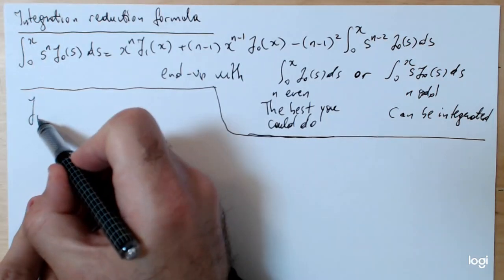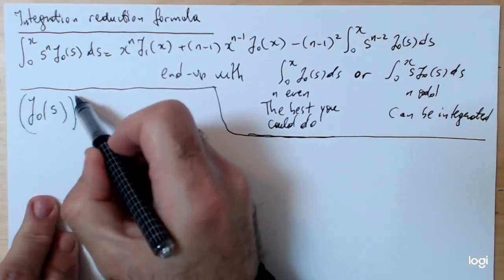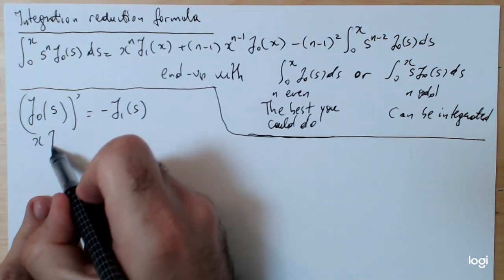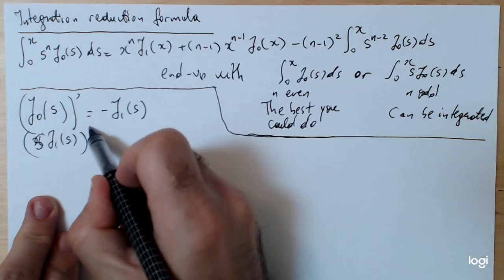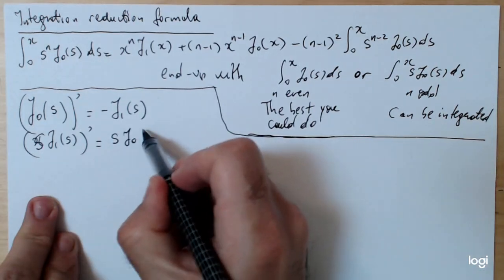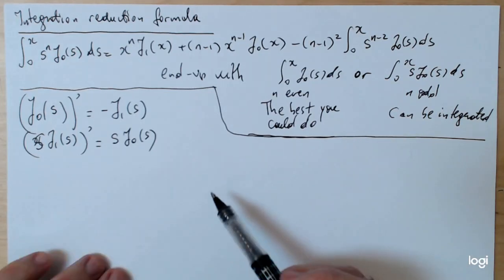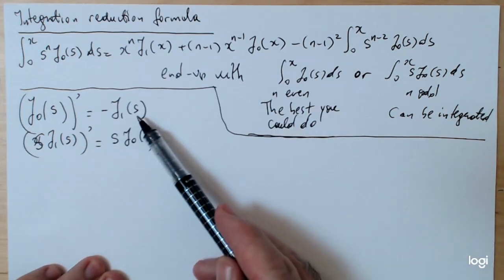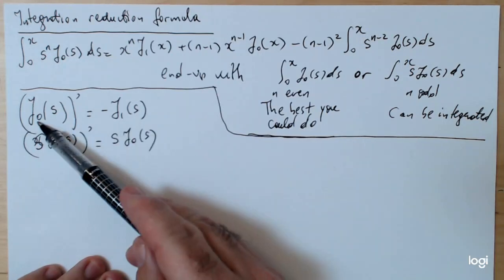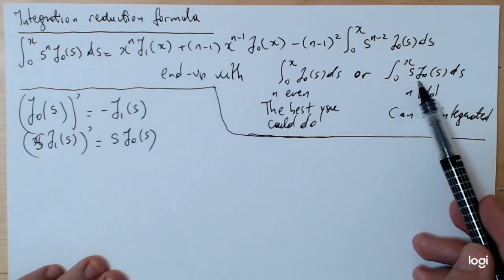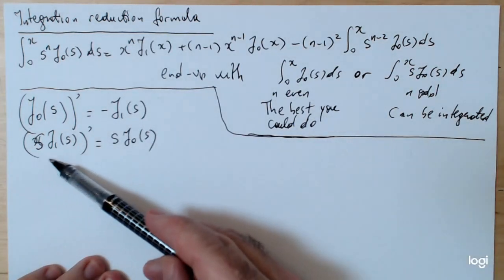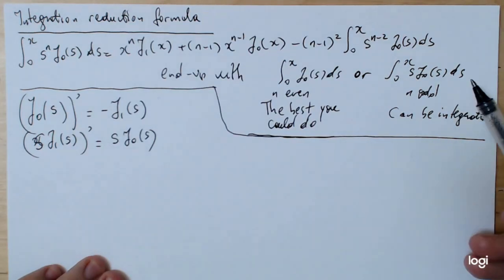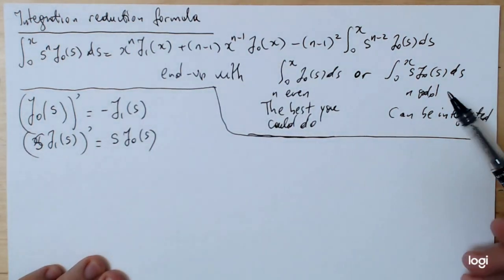The two formulas we're going to use repeatedly when applying this integration reduction formula are: the derivative of j₀(s) equals minus j₁(s), and the derivative of s·j₁(s) equals s·j₀(s). If you end up with just the integral of j₀, there is nothing else you can do — don't confuse the derivative with the antiderivative. But if you end up with s·j₀, that's the antiderivative of (s·j₁)', so you can replace it and give the answer in terms of just j₁ and j₀.